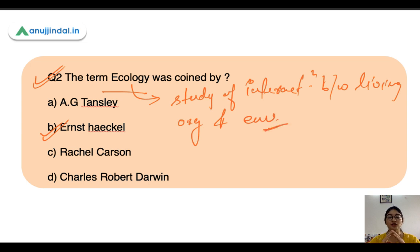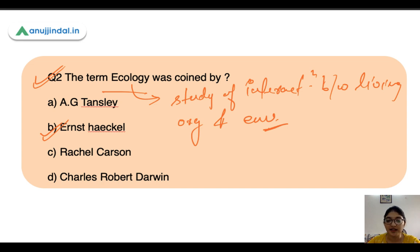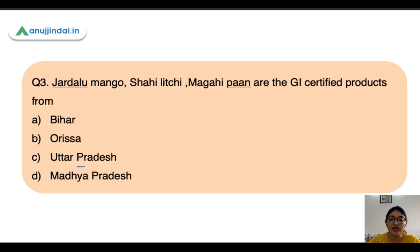The environment includes both biotic components and abiotic components. Biotic components are living components — organisms, plants. Abiotic components include air, water, atmosphere, radiation, and sunlight. You should know the basic questions on biotic and abiotic components thoroughly.